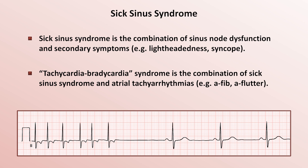One can imagine a situation in which paroxysmal AFib that is poorly rate controlled is the initial pathology, which then leads to atrial remodeling over time as a consequence of the rapid atrial depolarizations, and this remodeling then damages the sinus node — but it seems unknown as to whether that plays any significant role in the mechanism.